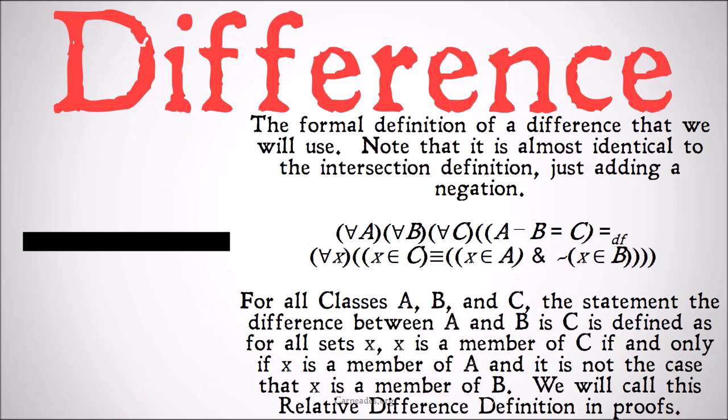The formal definition of difference that we will use is as follows. Note that it is almost identical to the intersection definition, just adding a negation. So for all classes A, B, and C, the statement the difference between A and B is C is defined as: for all sets X, X is a member of C if and only if X is a member of A and it's not the case that X is a member of B. We're going to call this relative difference definition in proofs.